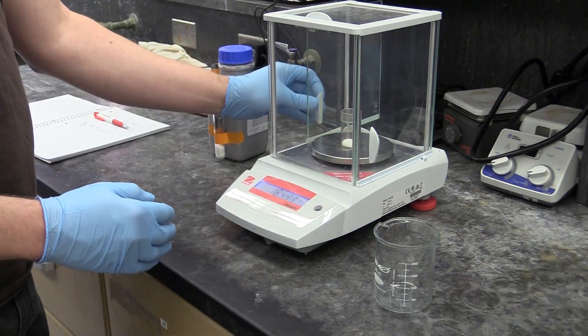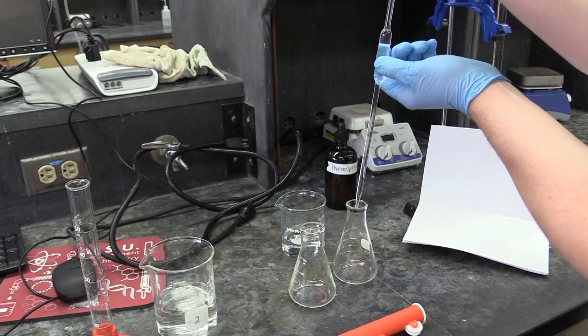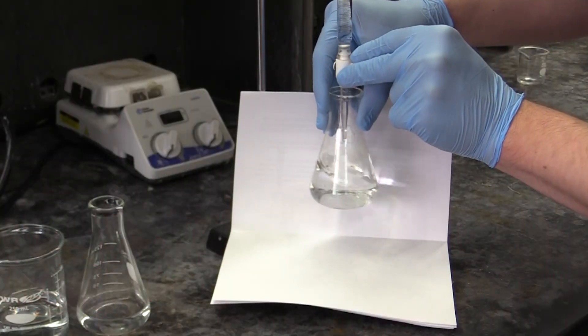You'll prepare and titrate your unknown acid solution the same way you titrated the oxalic acid solution. In your post lab, you'll use the data from these titrations to identify the unknown.